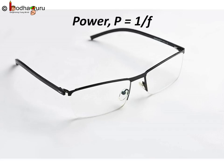The power of a lens is defined as the reciprocal of its focal length. It is represented by the letter P. So P is equal to 1 by f.